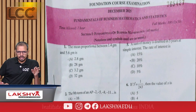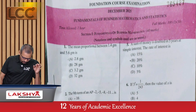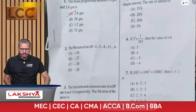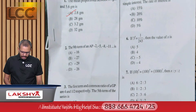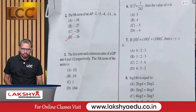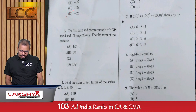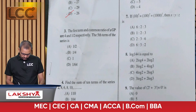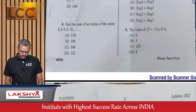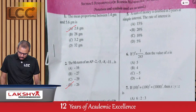Question 1: The mean proportion between 1.4 and 5.6 — right answer is option A. Question 2: The ninth term of AP: -2, -5, -8, -11 — option D. Question 3: The first term and common ratio of GP are 4 and 1/2 respectively, find the fifth term — option B. Question 4: Find the sum of 10 terms of the series 2, 4, 6, 8, 10... — option A.